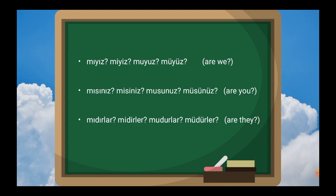For 'are you?' (plural form): sınız, siniz, sunuz, sünüz. That is: mı plus sınız, mi plus siniz, mu plus sunuz, mü plus sünüz — giving mısınız, misiniz, musunuz, müsünüz.